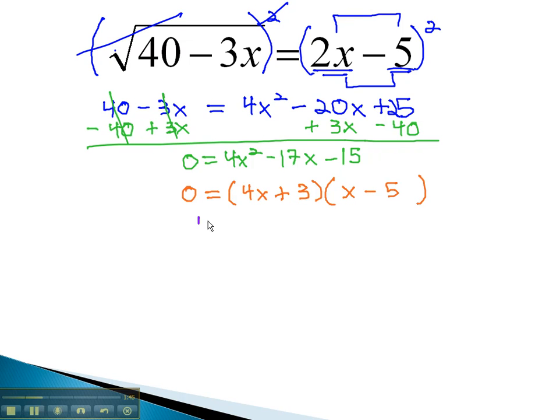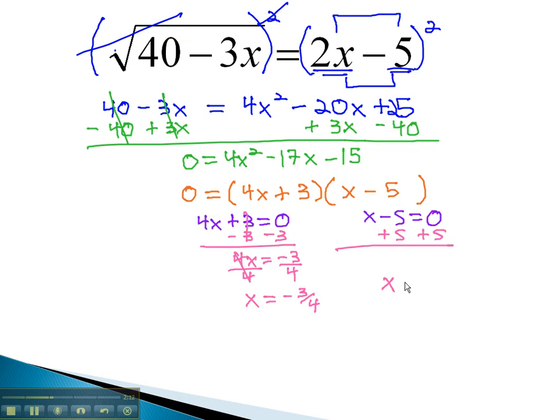Once we're factored, we can set each factor equal to 0. 4x plus 3 equals 0, and x minus 5 equals 0. Then we can solve each of the resulting equations by subtracting 3. 4x equals negative 3, and dividing by 4 to get our first answer for x, negative 3 fourths. Again, adding 5 will give us x equals 5 for our second solution.